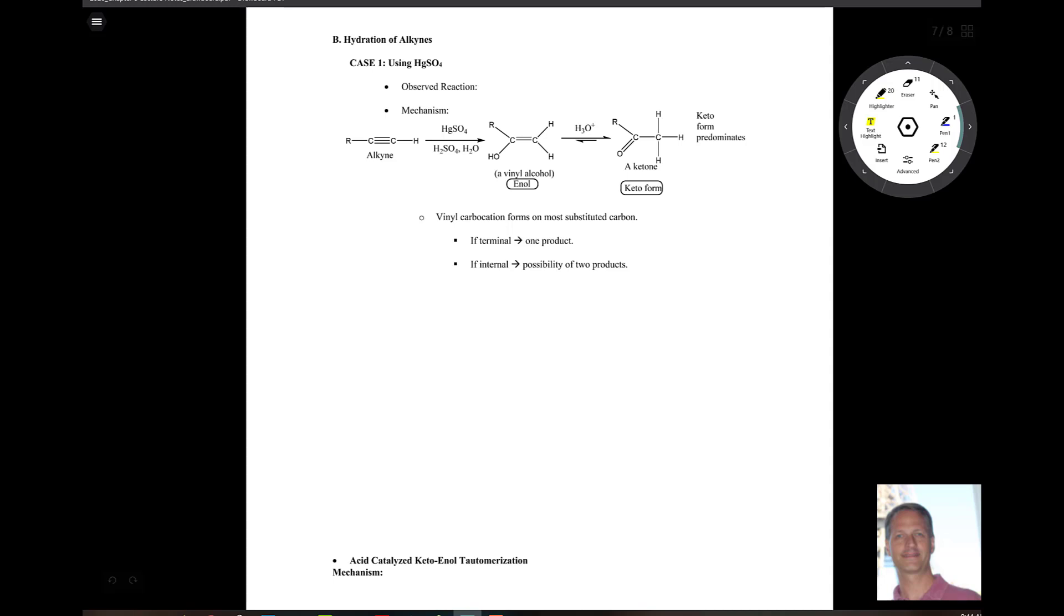So the first step of this reaction, we have an alkyne reacting with mercury sulfate, sulfuric acid, water. And this gives us an alcohol, that's an alcohol, and that's an alkene. And together that is called an enol, vinyl because we're next to a double bond.